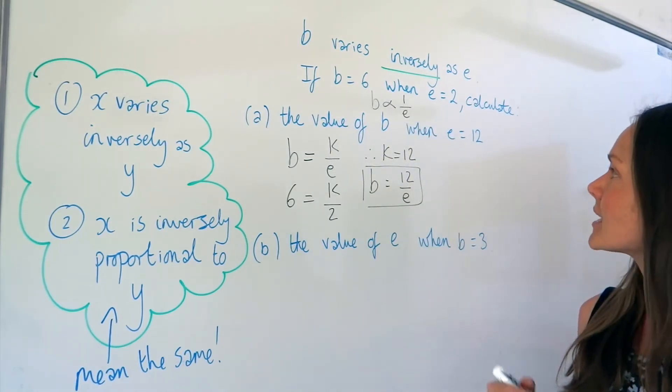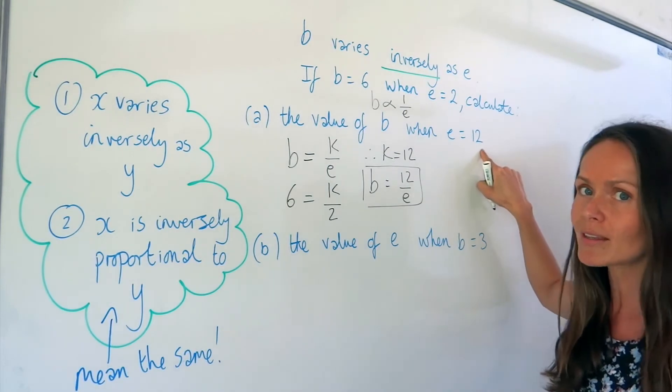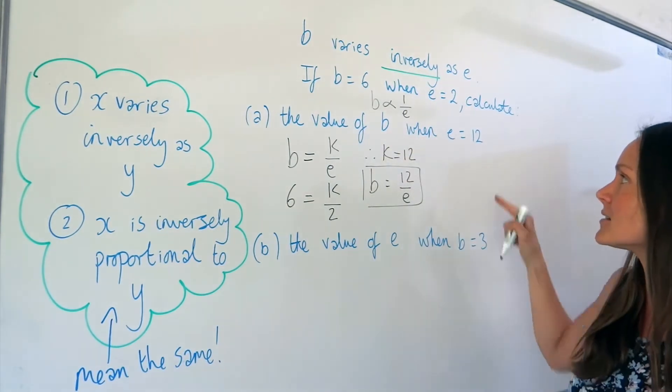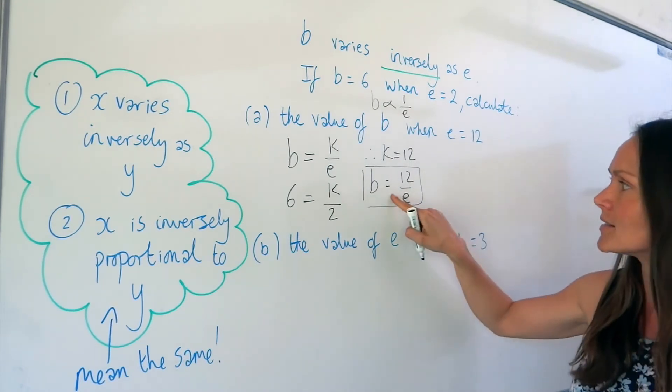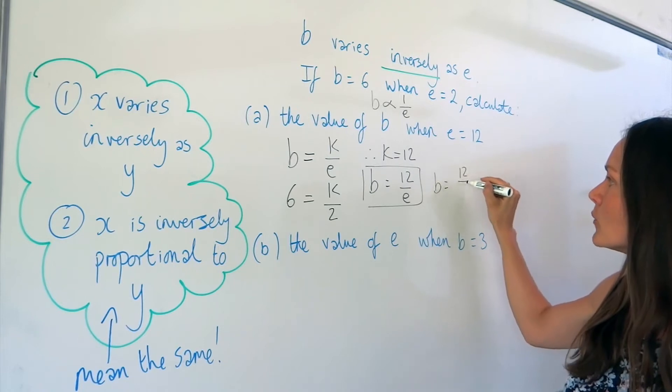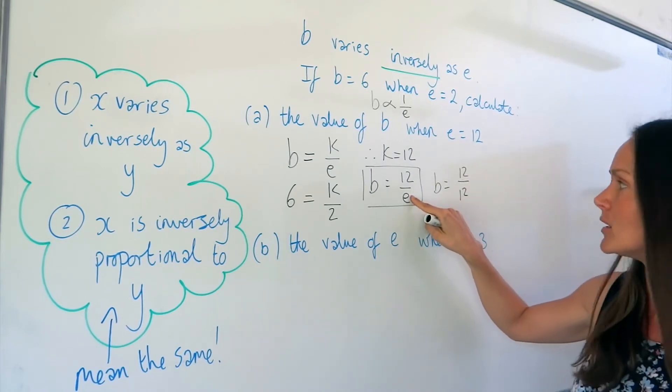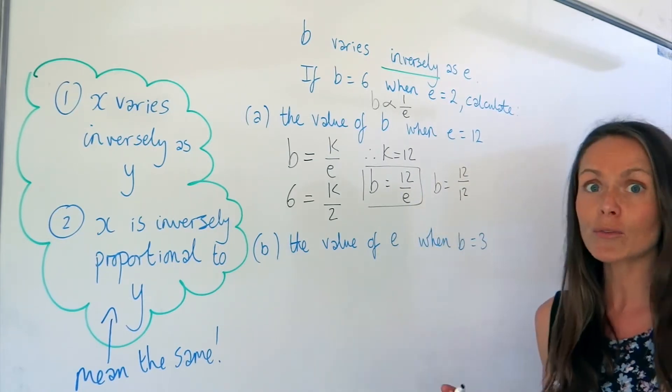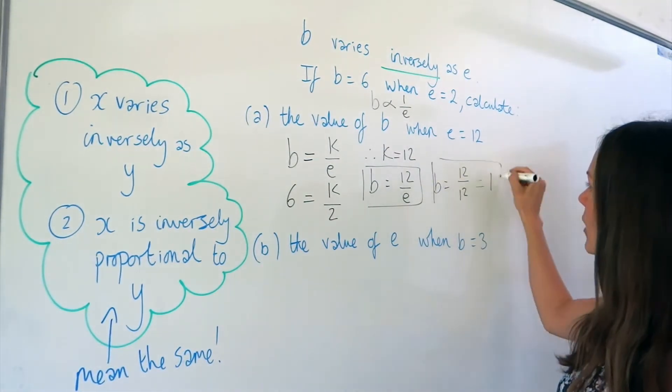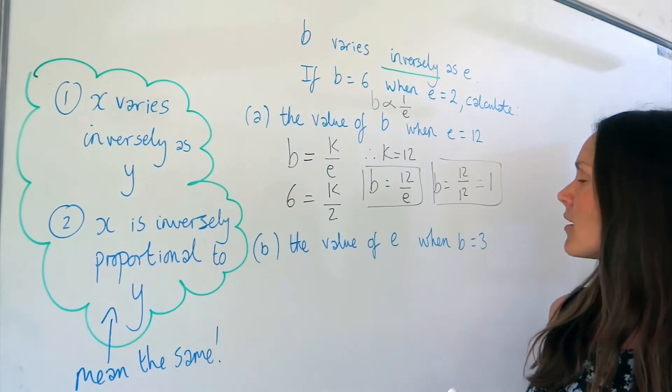So in part A, it tells us the value of E, and using that value 12, we have to work out B. So you just replace E with 12 in this equation. So B is equal to 12 over 12. So I'm just changing that value underneath. So 12 divided by 12 is 1. So I found the first part to the question in part A.